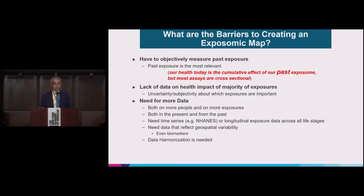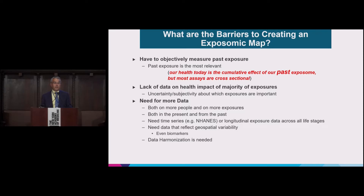There's a lack of data on the health impact of the majority of exposures in our environment, and uncertainty about which environmental exposures are important. We simply need more data — more data on people, more exposures measured, both today and from the past. We need time series data. There are already some big datasets like NHANES, and we need longitudinal exposure data across all life stages. ECHO, All of Us, and other consortia can provide some of that data. We need data that reflect the geospatial variability of the exposome, even biomarkers — every time we measure a biomarker, we should attach a geospatial coordinate. And because these data are so disparate, structured and unstructured, we'll need ways to bring them together through harmonization.